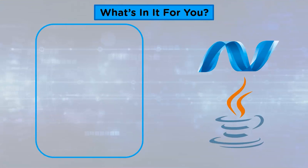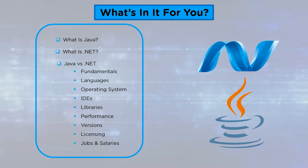Let's look at today's agenda. We'll first begin with understanding what is Java, following which we will understand what is .NET. Then we will look at the comparison between .NET and Java on the following parameters: Fundamentals, Languages, Operating Systems, IDEs, Libraries, Performance, Versions, Licensing, and Jobs and Salaries.